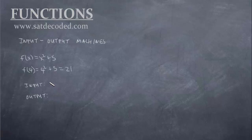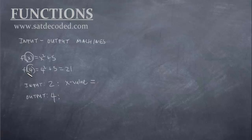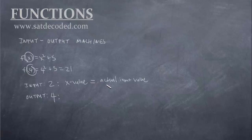Every function has two inputs and every function has four outputs. The x or x value is the first input — that's the thing inside the parentheses. The second input is whatever happens to replace it. So in this case it's 4, but it could be anything: 4, 5, an expression like x plus 2, or a variable like a. Whatever happens to be in the new parentheses, that is our actual input value. So just remember: inputs are x and the actual input.